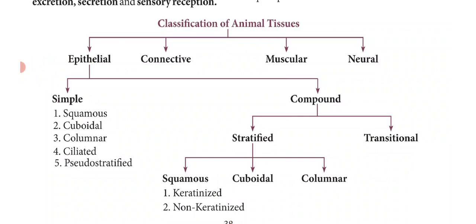The four types of animal tissues are epithelial tissue, connective tissue, muscular tissue, and neural tissue. The main function of epithelial tissue is covering — it covers the whole body. The main function of connective tissue is support — it gives support to the body. The main function of muscle tissue is movement, and the main function of nervous tissue is to control and coordinate the whole body.